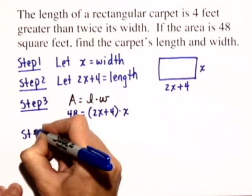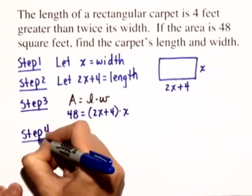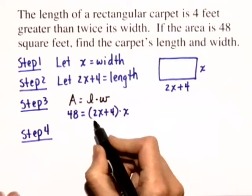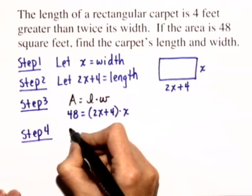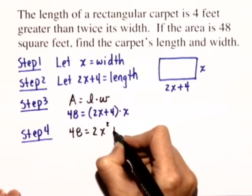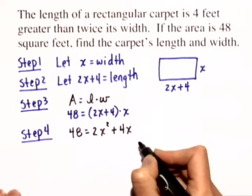Now we're ready for step 4. We're going to solve this equation. We need to distribute on the right hand side, and we get 48 equals 2x squared plus 4x.